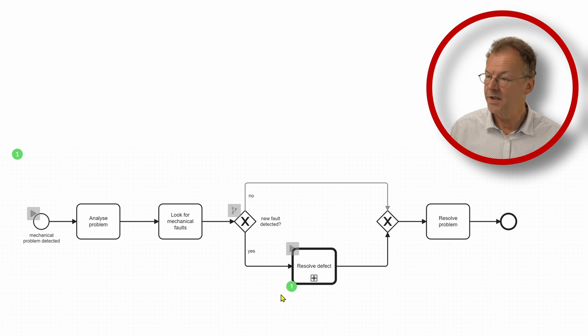So this process token of this first level will wait here and now the call activity is activated. And the ID of this call activity is the same ID as of the whole process. So there is another instance of this process started.